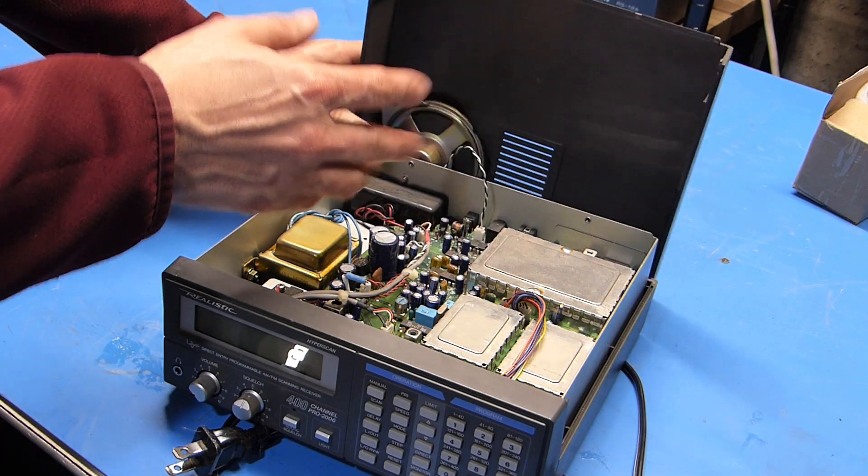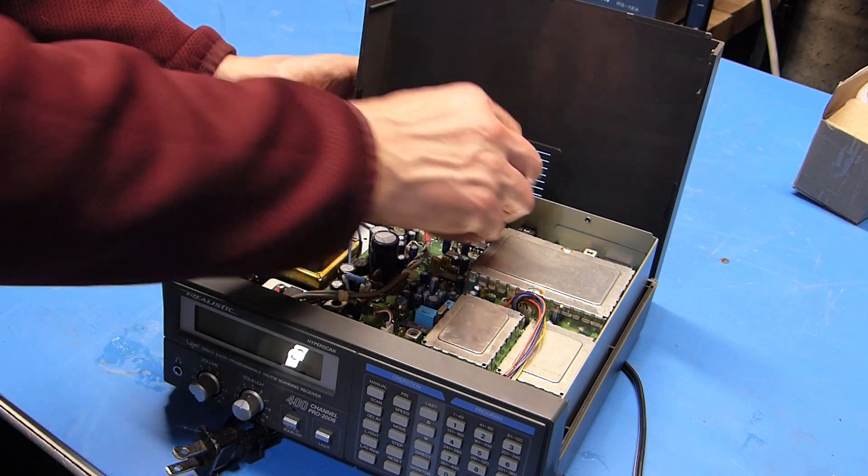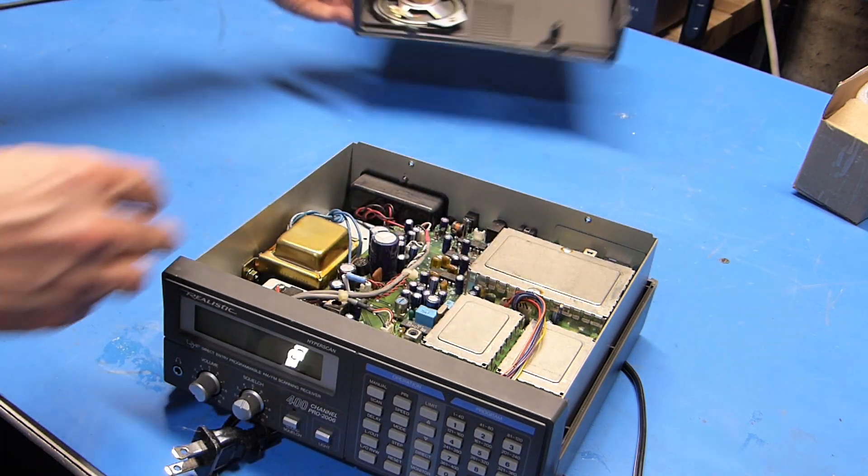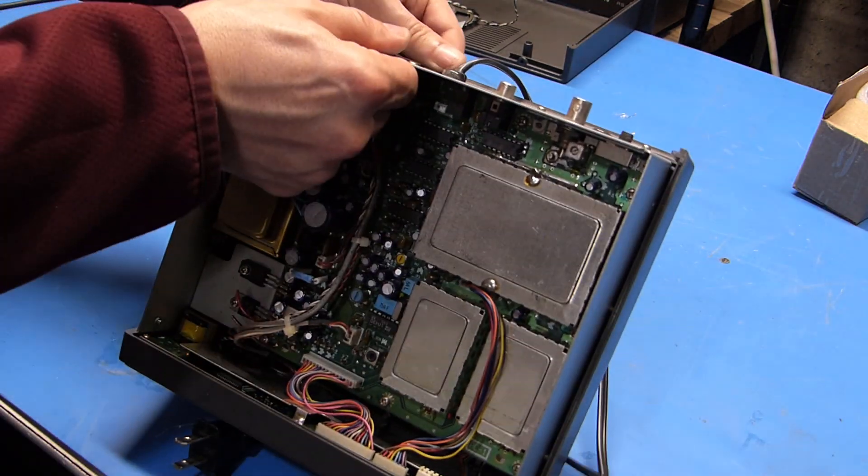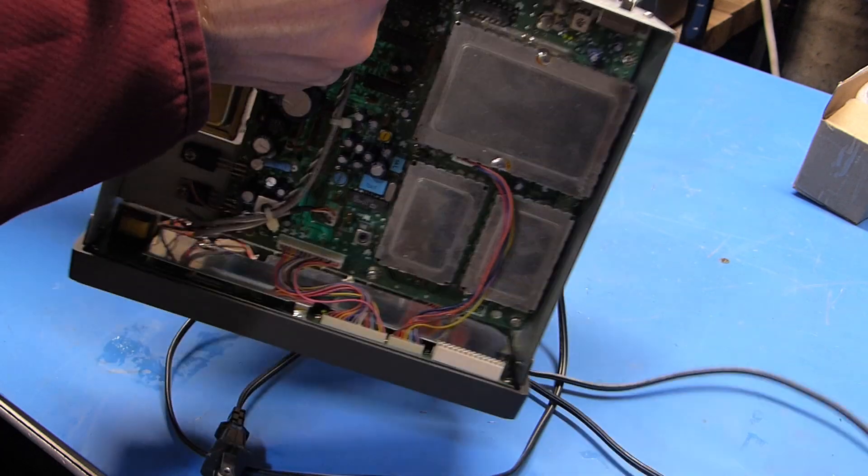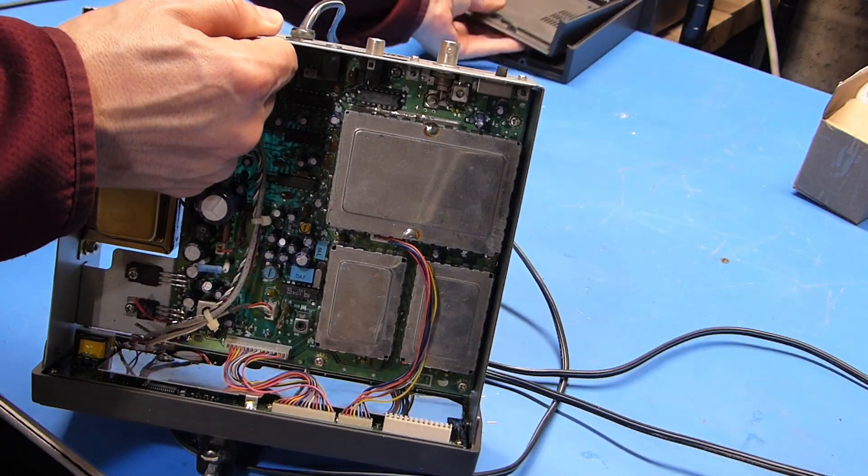So the top cover just popped right off but there is a connector holding on the speaker so I'm going to pull that off the circuit board and set this aside. Then the bottom cover is going to come off just the same except there's no speaker on that so we'll just set it aside too.